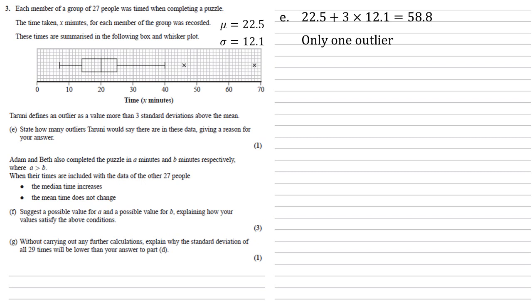Adam and Beth also completed the puzzle in A minutes and B minutes, respectively, where A is larger than B. When their times are included with the data of the other 27 people, the median time increases and the mean time does not change.